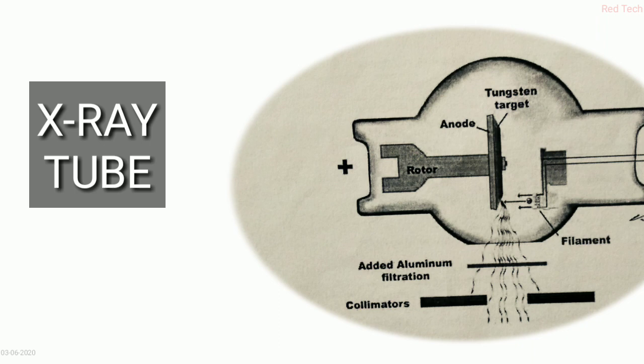Phir aata hai hamara tube housing. Tube housing hum basically radiation leakage ko rokne ke liye karte hain - prevent karne ke liye tube ko hum pura housing karte hain, ek tarah se shielding provide karte hain jis se ki koi bhi radiation leakage na ho, chahe woh primary ho chahe woh secondary ho.